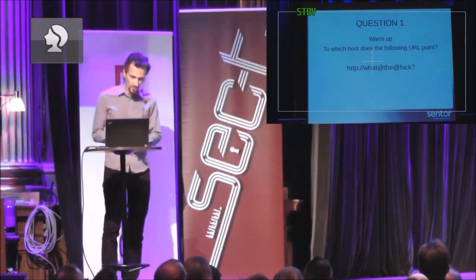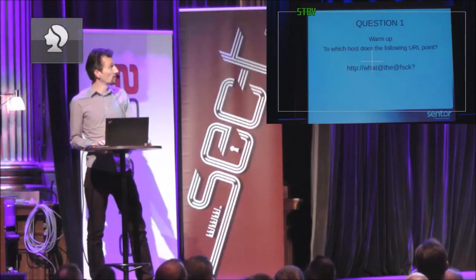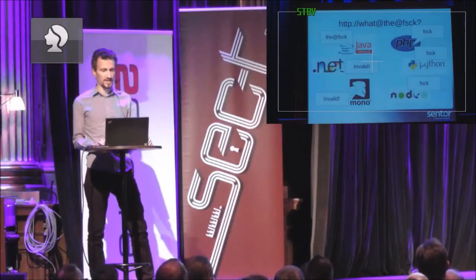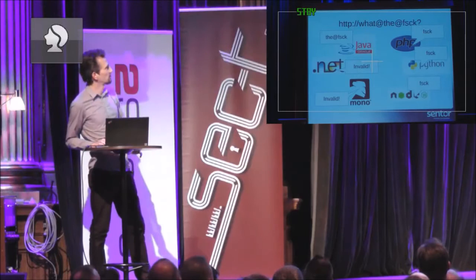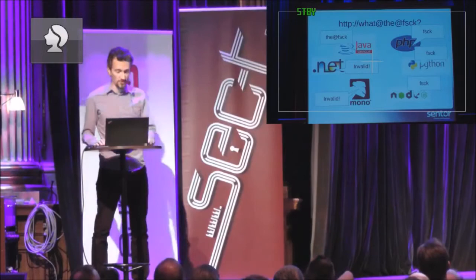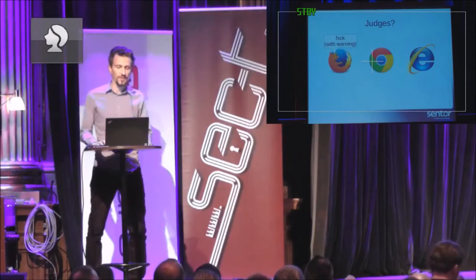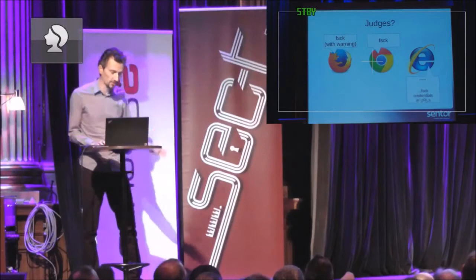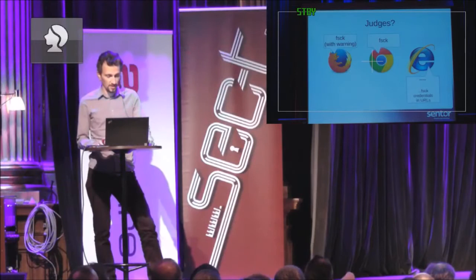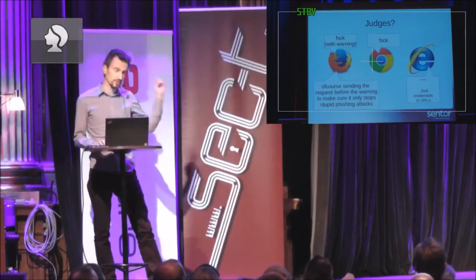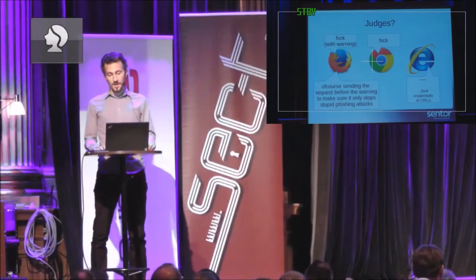First question: to which host does the following URL point — with multiple at signs? One or the other of those at signs is going to get interpreted as the credential separator. The guys on the right are voting for the last one; Java is going for the first one; and the .NET brothers are saying that's an invalid URL, which is the reasonable thing to say. The judges say it goes to the last site, but with a warning because credentials in URLs are really dangerous. Chrome says go there; Internet Explorer quit doing credentials in URLs as of IE6 or so. Firefox will actually send the request to the actual URL before showing you the warning, so the warning won't help — your credentials will already be gone.